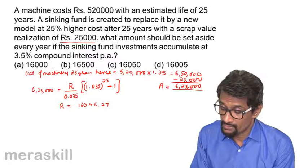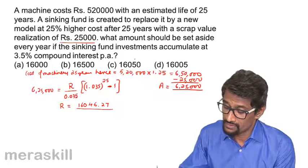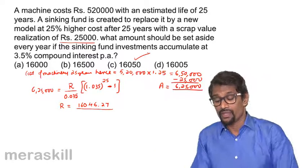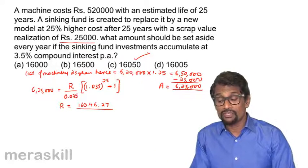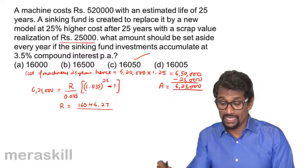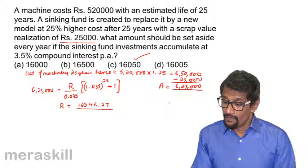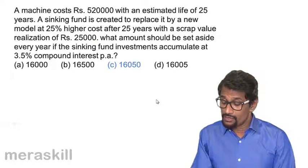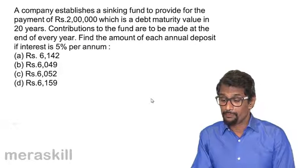Among the given options, the closest answer is 16,050. This is how you create a sinking fund — take into account all the aspects of the problem, and the answer comes out to 16,050.